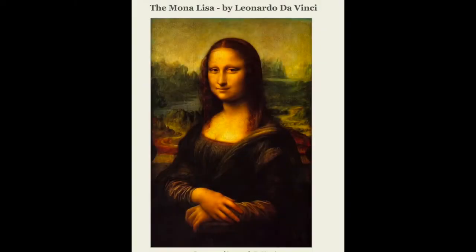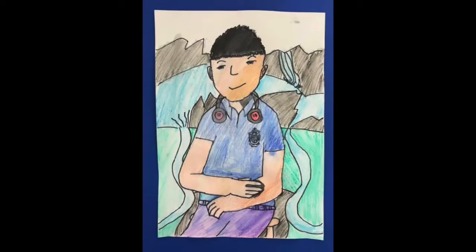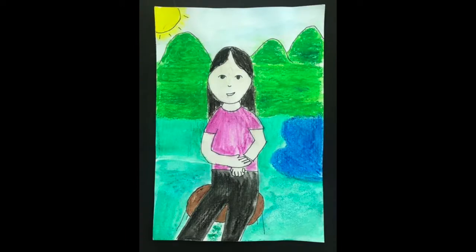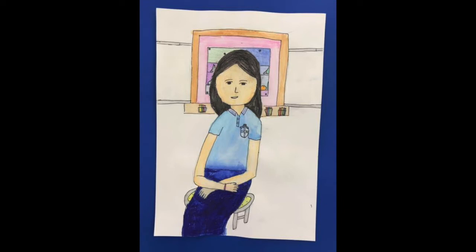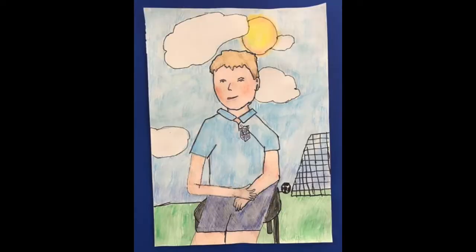Your assignment is to do a self-portrait of yourself in the position of the Mona Lisa. You're only going to need to draw the top half of your body, but you do need to have your hands crossed one on top of the other, just like hers, sitting at a slightly turned angle. The background behind you can be anything that you like — maybe something that tells about your likes or your interests.